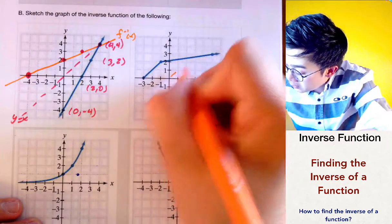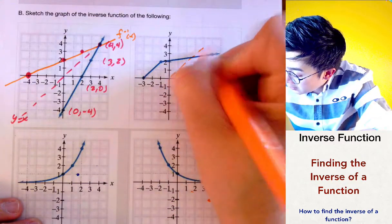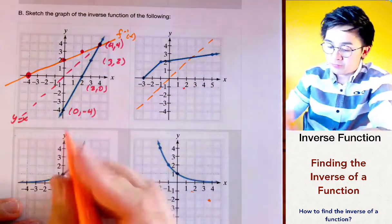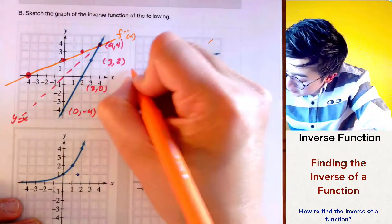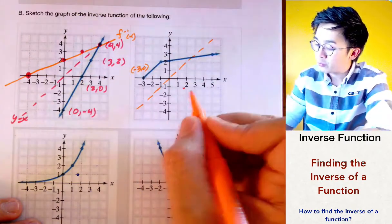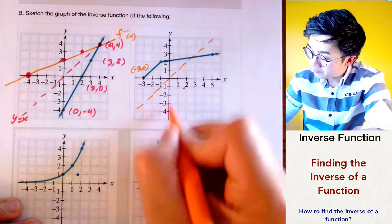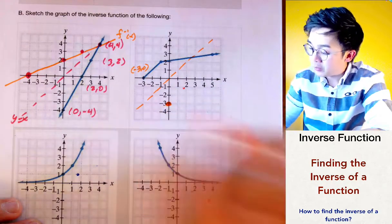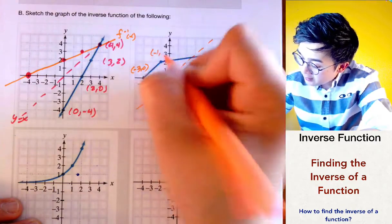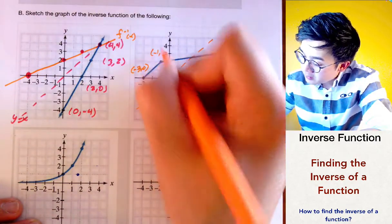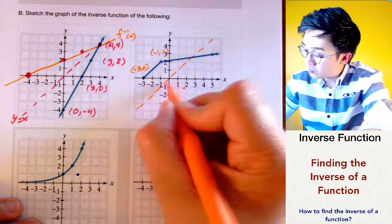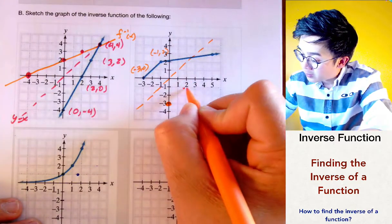We'll do the same with the second graph. Drawing the diagonal line of reflection y = x, the first point is at (-3, 0), so its inverse is (0, -3). The next point is at (-1, 2), so its inverse is (2, -1).